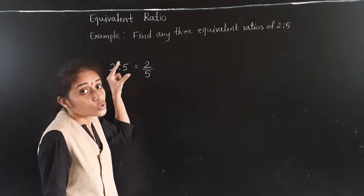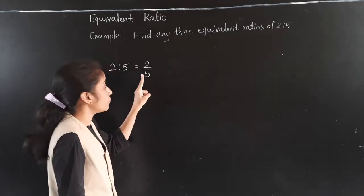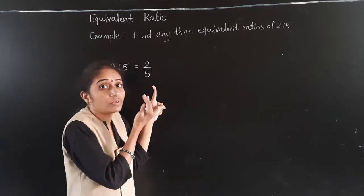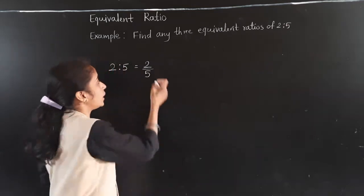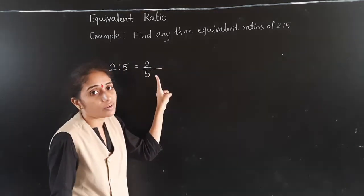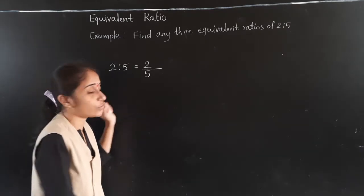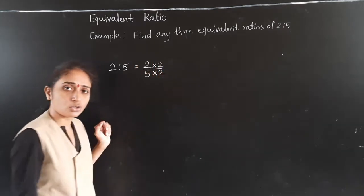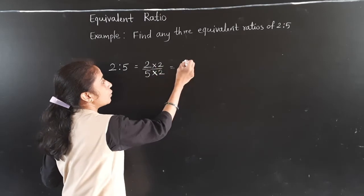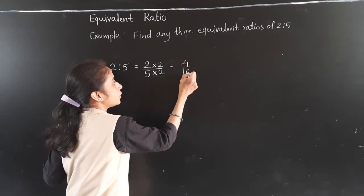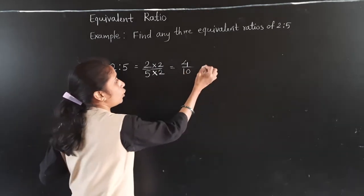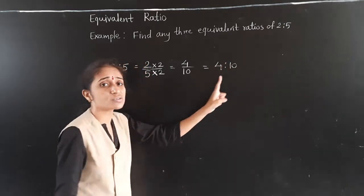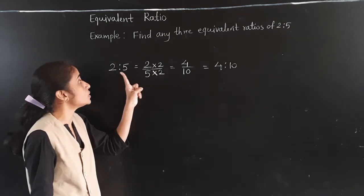To find equivalent fractions, we multiply the numerator and denominator by the same number. If we multiply by 1, we get the same ratio 2 is to 5. Now multiplying numerator and denominator by 2: 2 twos are 4, 5 twos are 10, so we get 4 upon 10, which means the ratio 4 is to 10.